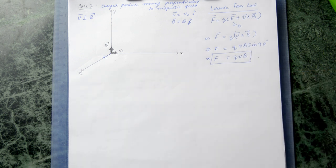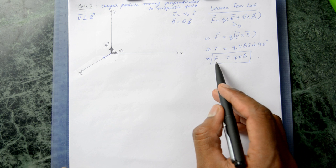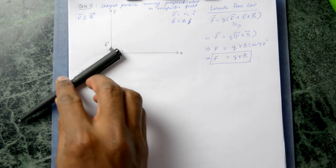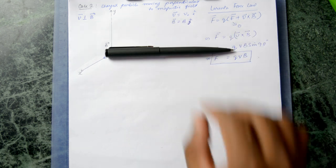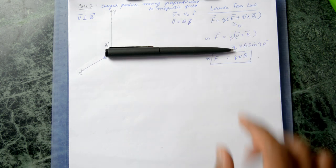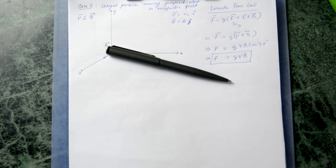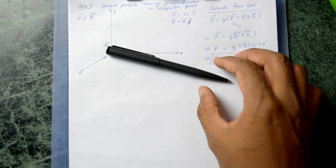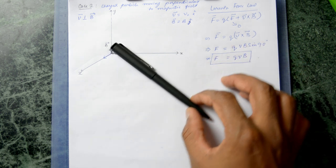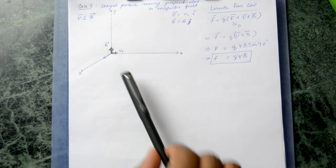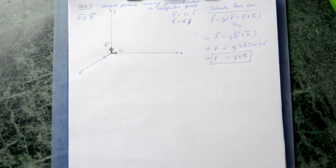Every time the particle experiences this force, the particle's velocity changes direction. As the velocity changes, the direction of the force itself also changes. The velocity then changes direction again, and the force changes again — this keeps happening such that you end up getting a trajectory which looks like that of a circle.